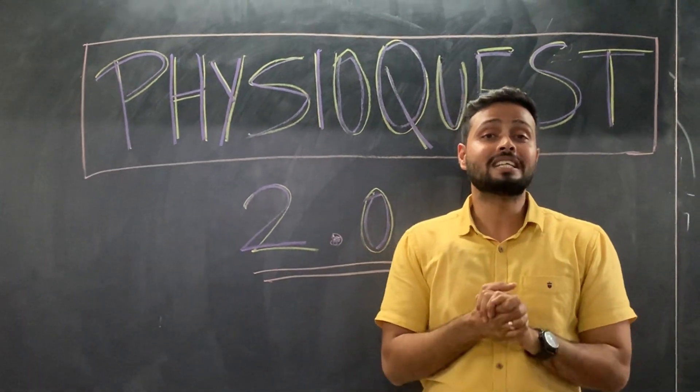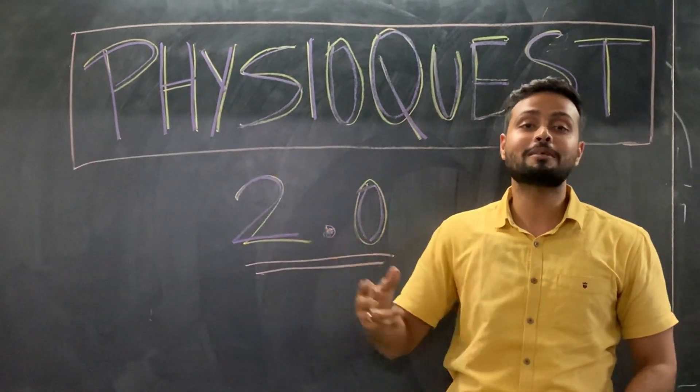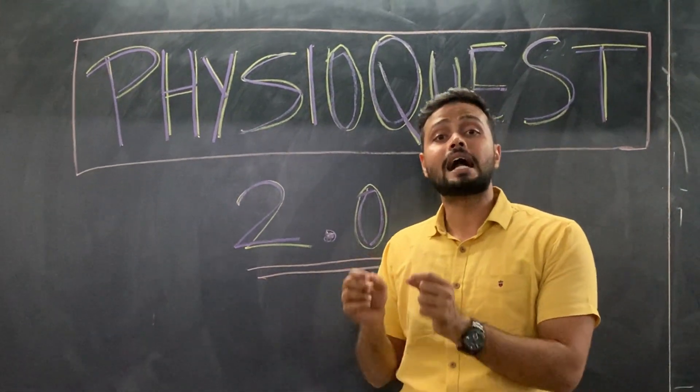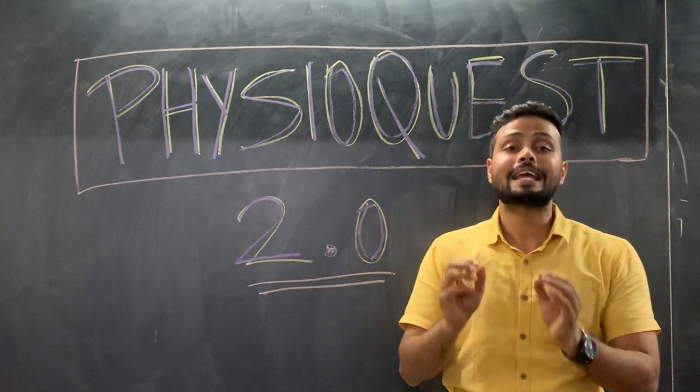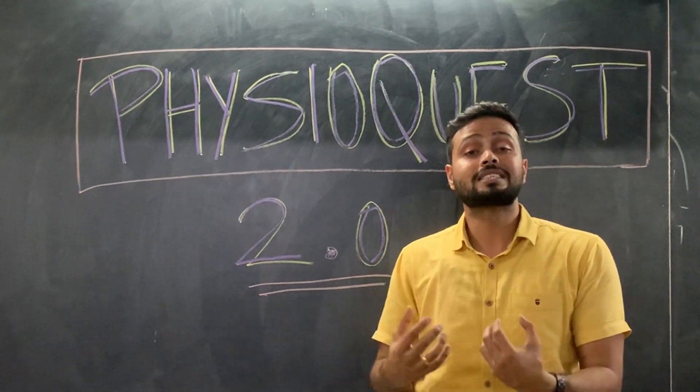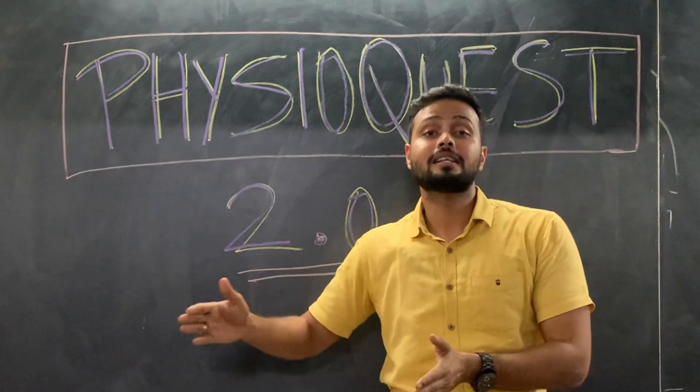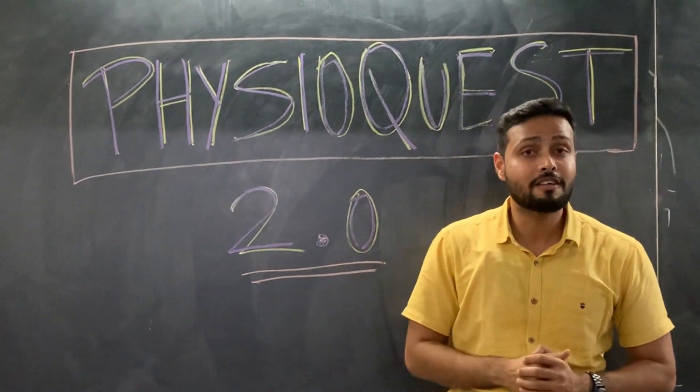The only remaining option is Option D, maximal intensity treadmill test. This is the correct answer because this test identifies the patient's capacity and endurance to perform at that particular level of activity, and that is why this is the correct answer.